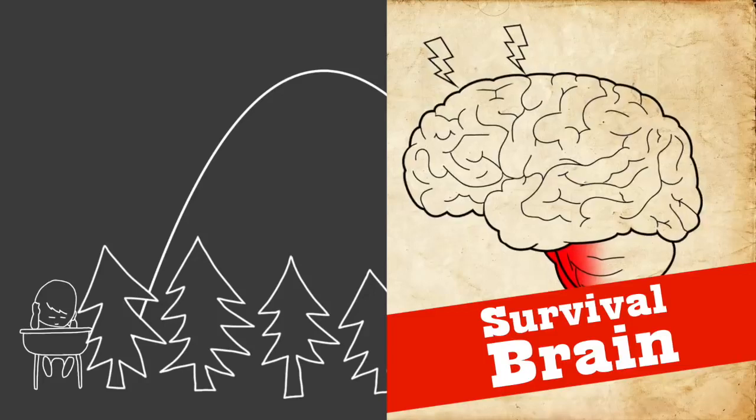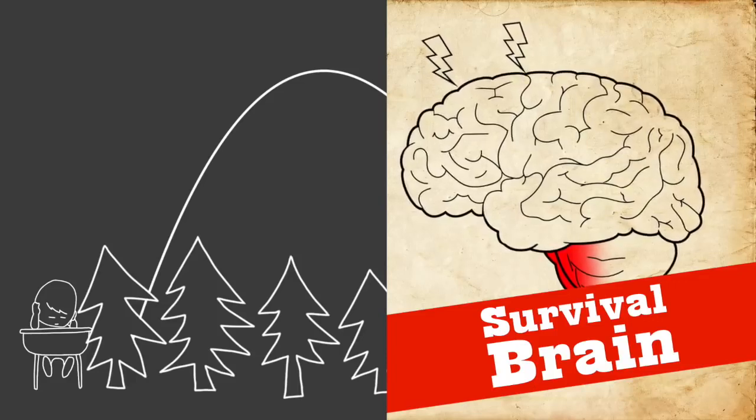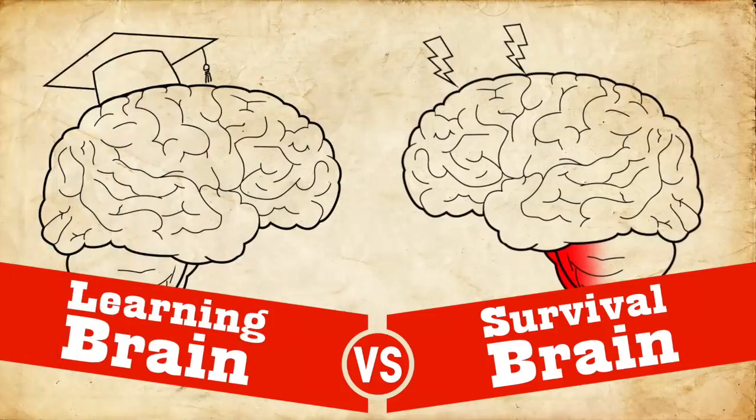So students in survival brain don't want to be picked on. They don't want to raise their hand and ask questions and look stupid. And so these people are also filled with doubt about their own ability to learn stuff. And they're afraid that other people can see how stupid they really are.